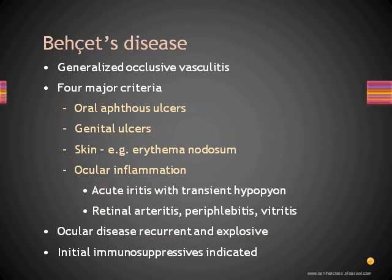Behçet's disease is a generalized occlusive vasculitis — it does not just involve the eye; it is a generalized condition. The four major criteria for diagnosis are oral aphthous ulcers, genital ulcers, skin lesions including erythema nodosum, and ocular inflammation. Ocular inflammation can be acute iritis with transient hypopyon. In fact, hypopyon uveitis is also a term used for Behçet's disease in the eye.